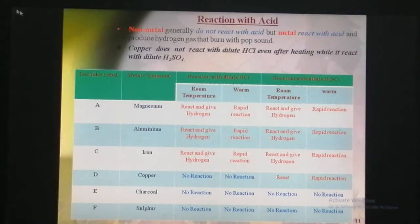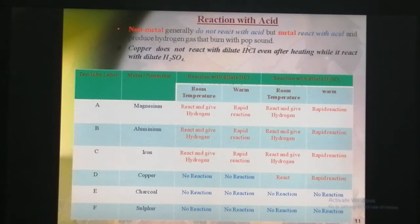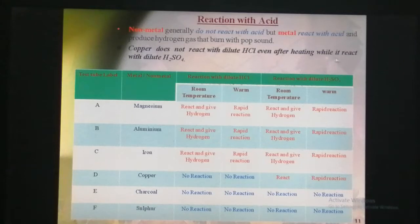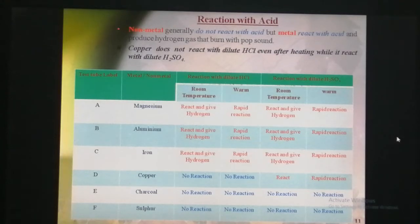So we can say that metals react with acid and produce a gas that burns with a pop sound. This pop sound indicates the presence of hydrogen gas. We should also note that copper does not react with dilute hydrochloric acid even on heating, but it does react with sulphuric acid. So metals react with acid and give hydrogen gas, while non-metals do not react with dilute acid, even after heating.